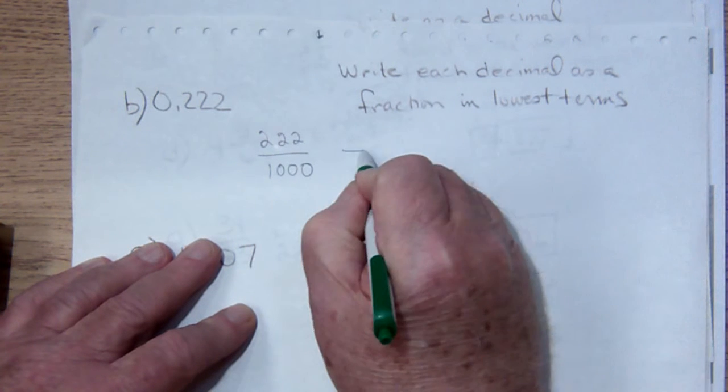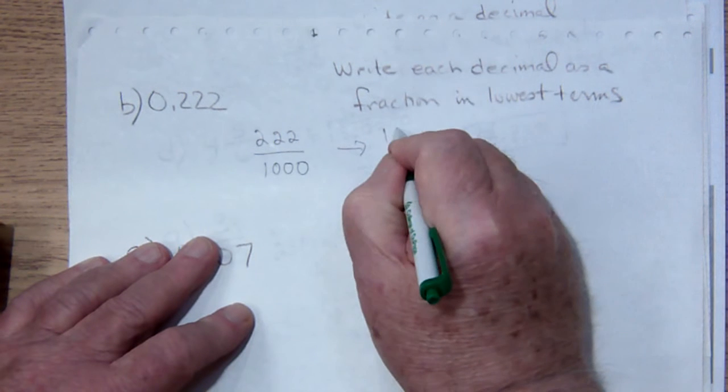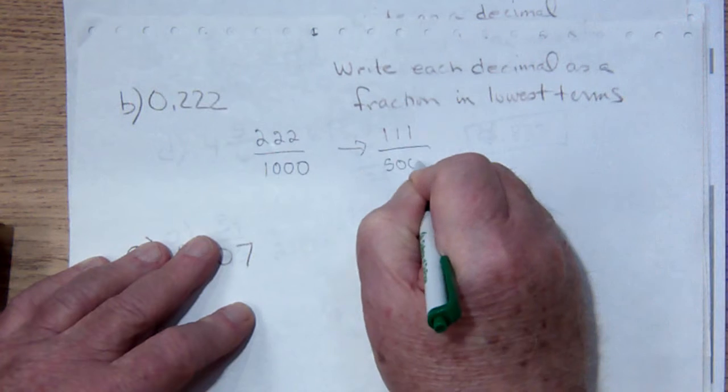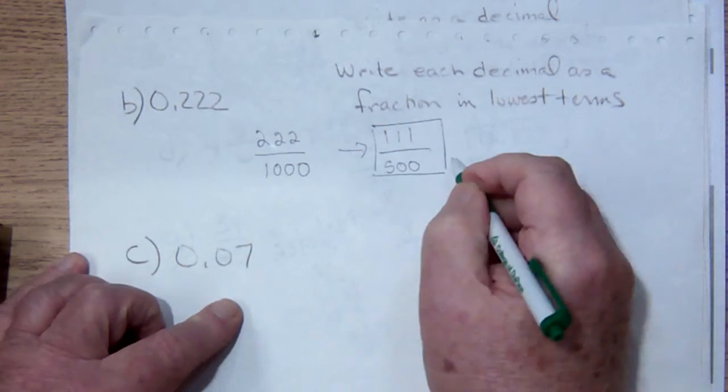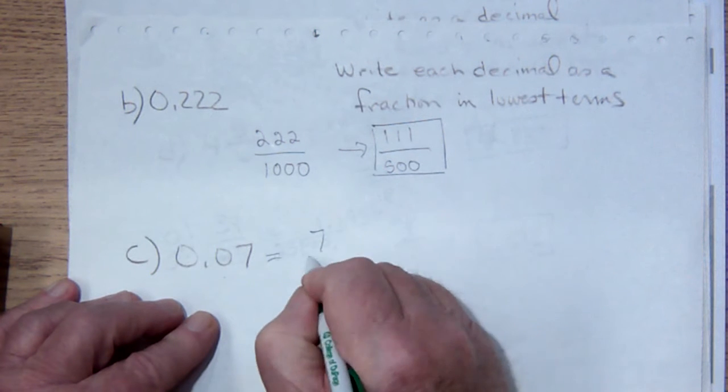Two will go into both of those, so if I put that in lowest terms, I'll have 1, 1, 1 over 500, and that can't be reduced any more. Here I have, this is tenths and hundredths, that is 7 over 100, and that's the complete answer.